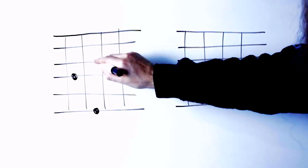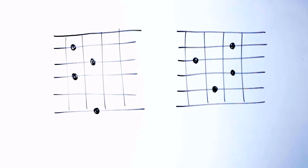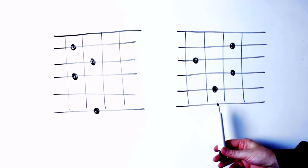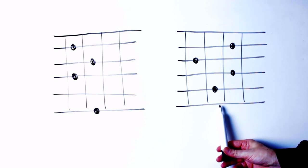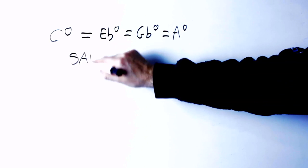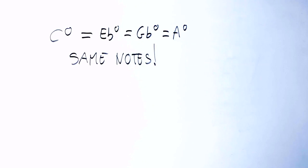Here are a couple of shapes for those chords on guitar. This chord can be called a C diminished seventh chord, but also an E flat diminished seventh chord, a G flat diminished seventh chord, and an A diminished seventh chord. All four names refer to the exact same chord played in the exact same positions.